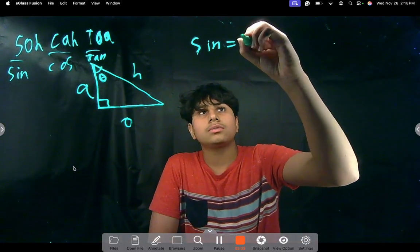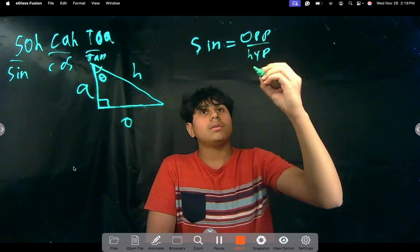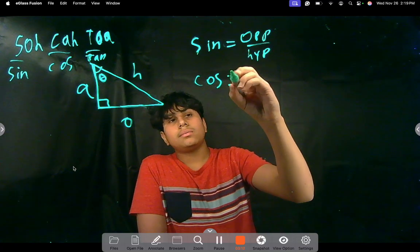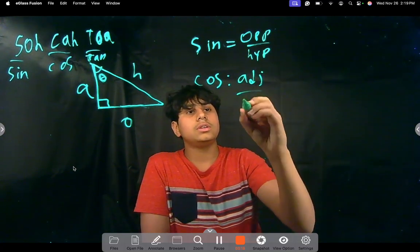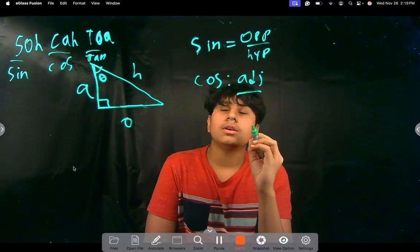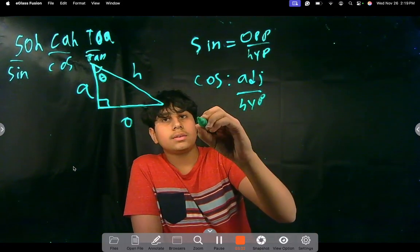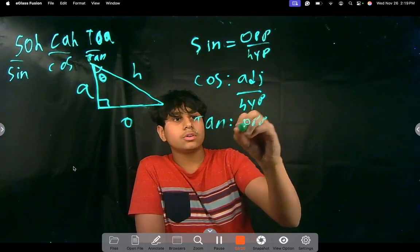So, for sine, let's write that. Opposite over hypotenuse. For cos, cosine, it's A and H. So, adjacent over hypotenuse. And then, tan is opposite over adjacent.